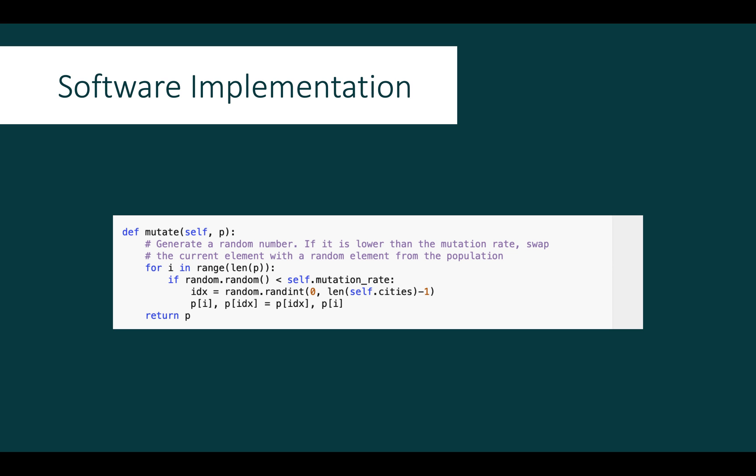The mutate function iterates over the child element, and for each city in the list a random number between 0 and 1 is generated. If the random number is less than the mutation rate, the current city is swapped with another randomly selected city.